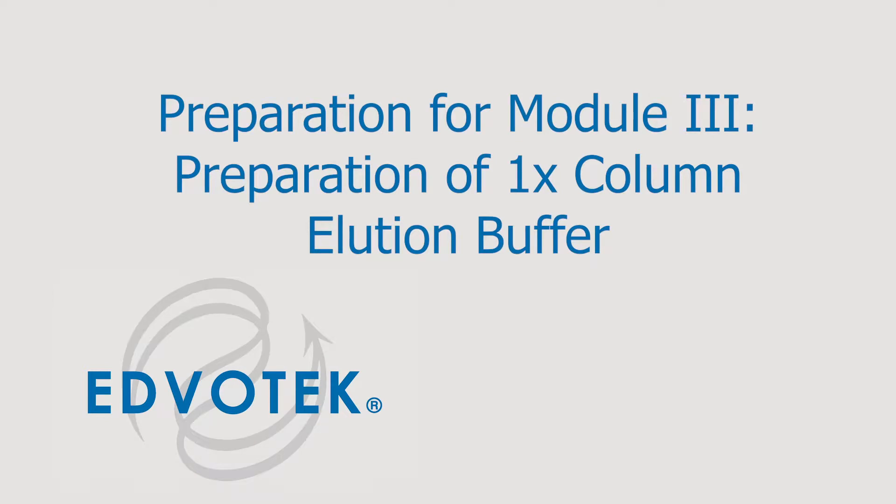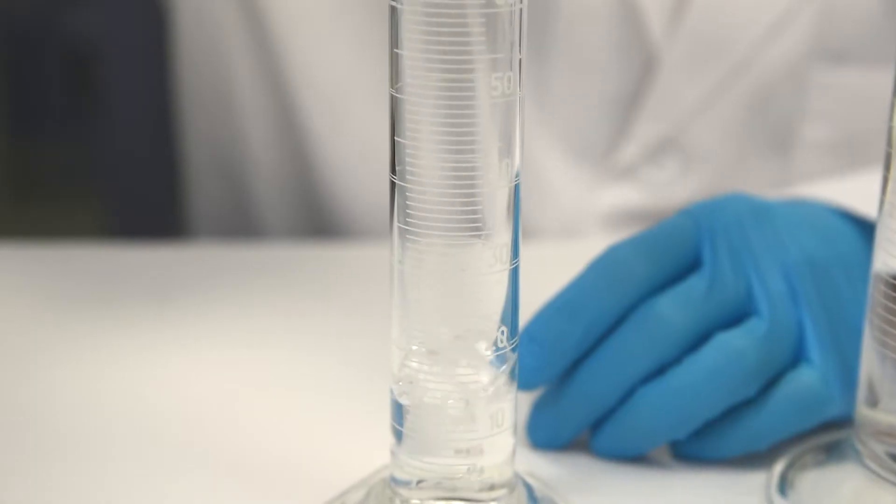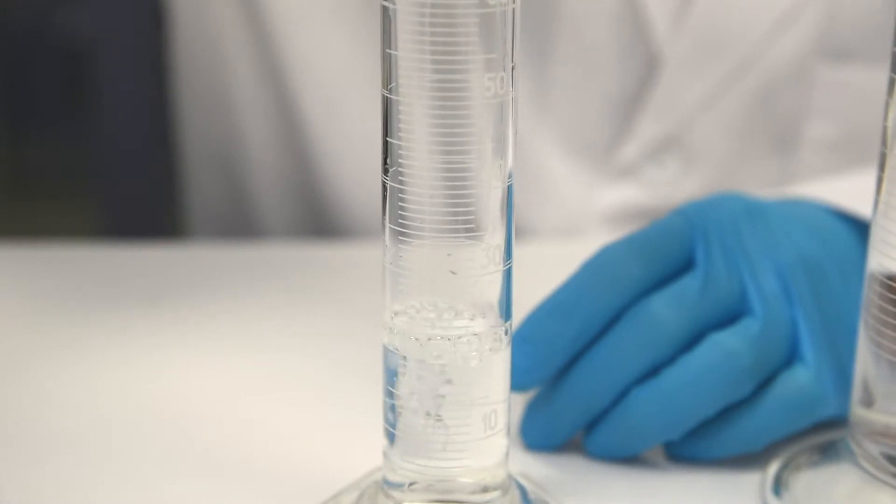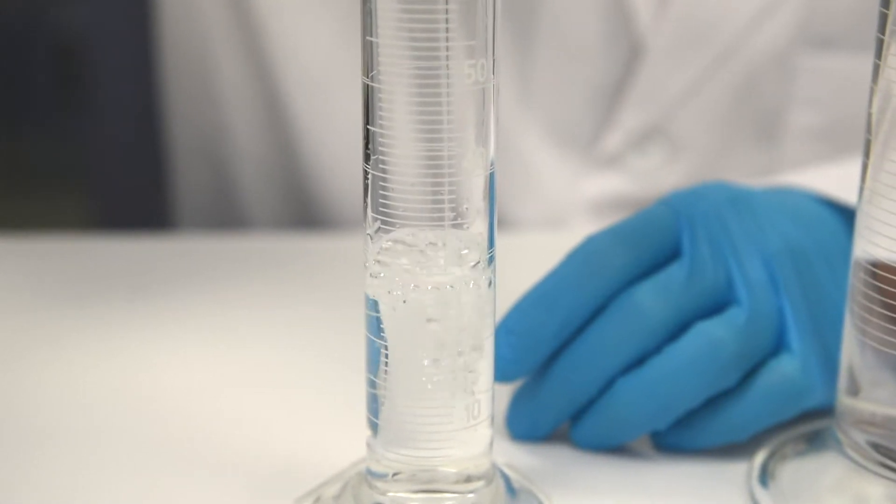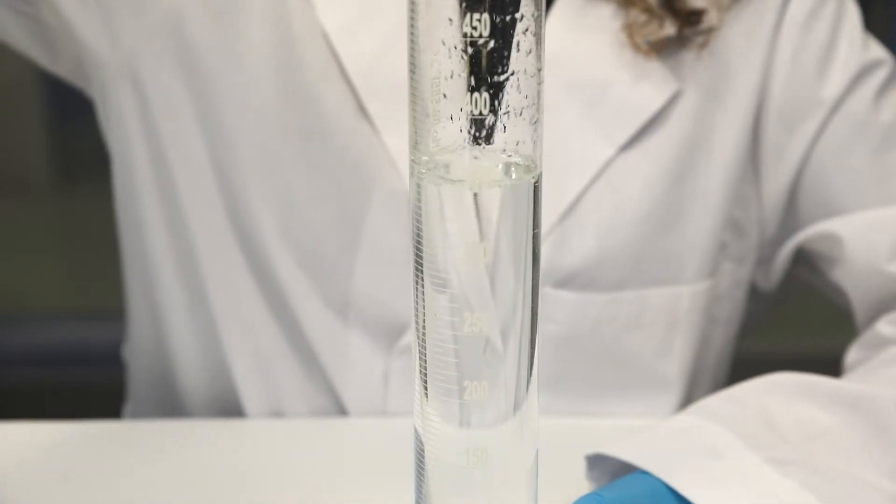Preparation of 1X Column Illusion Buffer, Step 1: Dilute the Column Illusion Buffer by mixing 35ml of 10X Column Illusion Buffer with 315ml of distilled water.